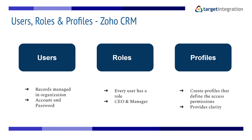There are two default profile permissions available: Administrators and Standard users. Administrators have access to the entire system, whereas Standard users have access to data according to the defined permissions, profiles, and roles in the organization. For example, Standard users can be sales reps or support agents, while Administrators can be managers, the CEO, or others with supervisory powers. We will now have a look at setting up user roles and profiles within Zoho CRM.